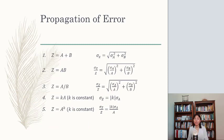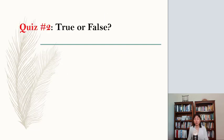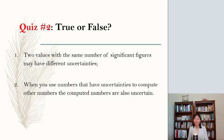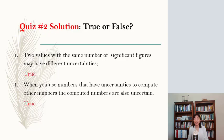Of course, if you have different formats of equations, the rule of propagation of error is the same. So here is just a list of different examples. Quiz: true or false. Two values with the same number of significant figures may have different uncertainties. When you use numbers that have uncertainties to compute other numbers, the computed numbers are also uncertain. Here are the answers.